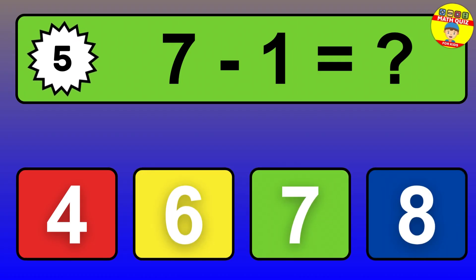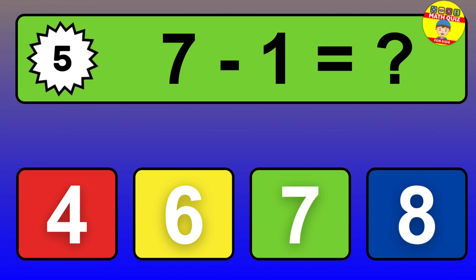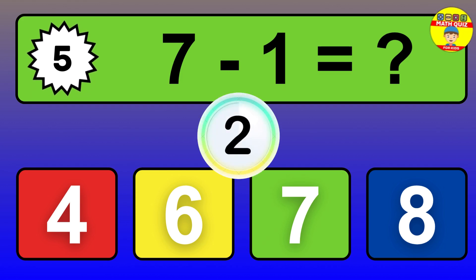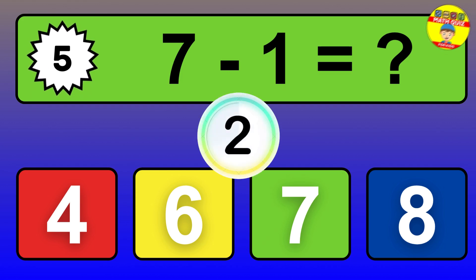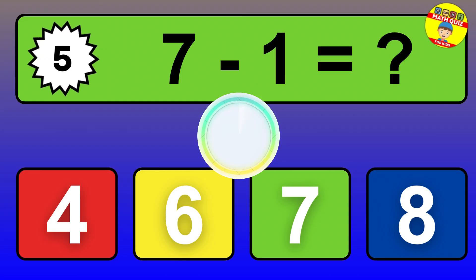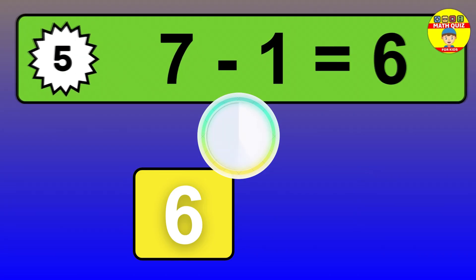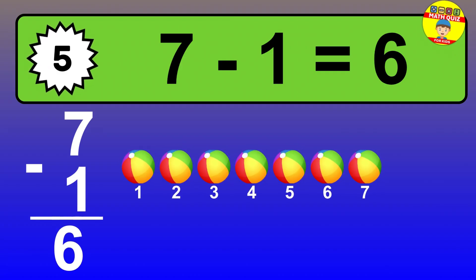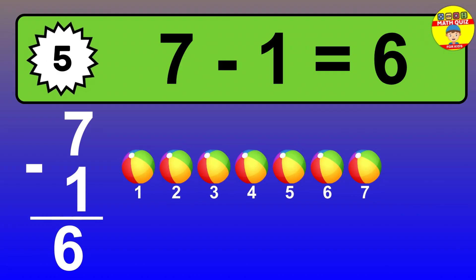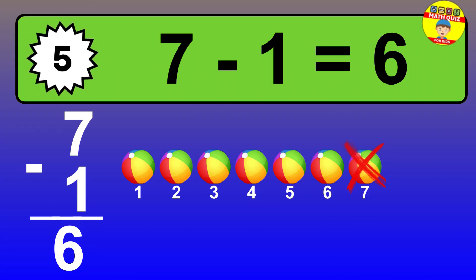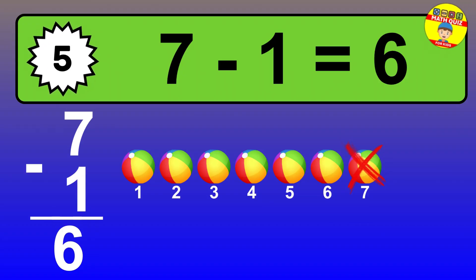Question 5. 7 minus 1 equals what? So the answer is 7 minus 1 is 6. Let's count it. 1, 2, 3, 4, 5, 6.